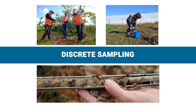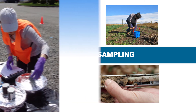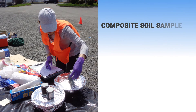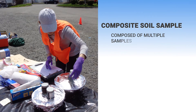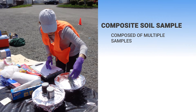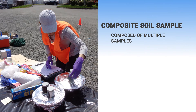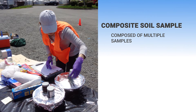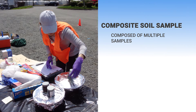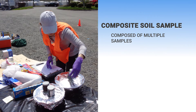Discrete soil sampling is the collection of a single soil sample from a specific location and depth interval. Discrete samples can provide an understanding of the distribution of concentrations in an area and help identify localized areas of elevated concentrations. However, a large number of samples, relative to other sampling methods, may be needed to adequately characterize an area. A composite soil sample is a sample composed of multiple smaller samples that are physically mixed to create a single sample. A single composite sample can be more representative of a defined area than a single discrete sample. However, composite sampling reduces information on variability in soils and can mask or dilute information on spatial trends.